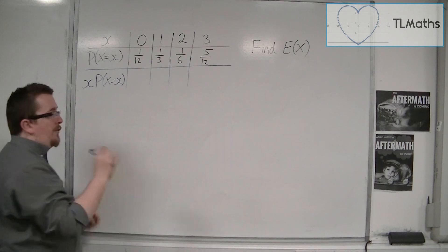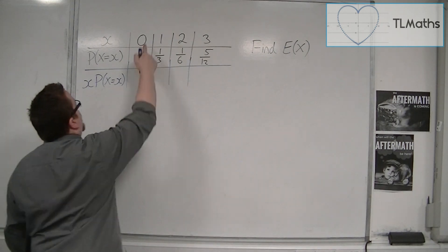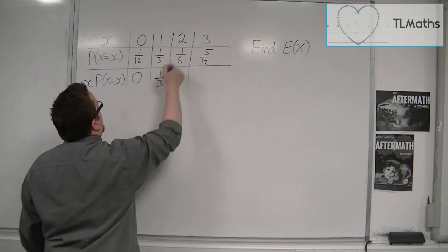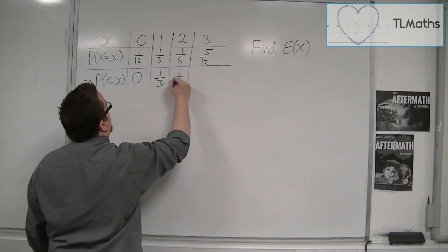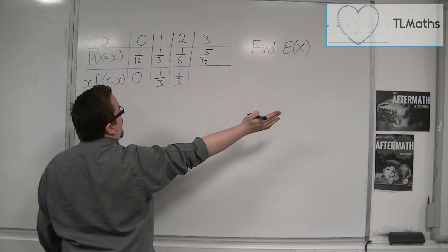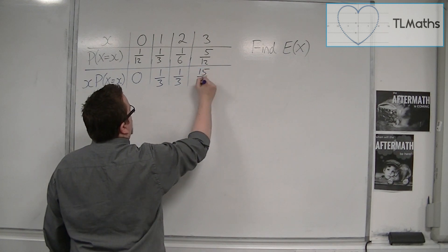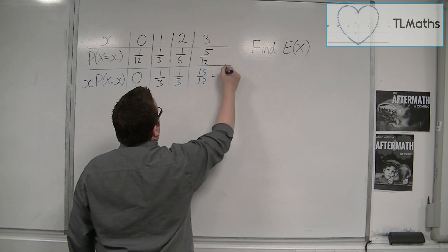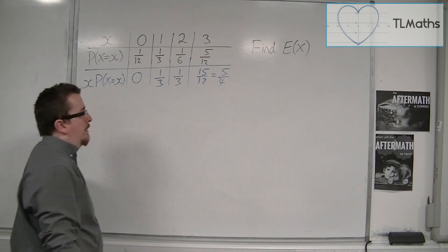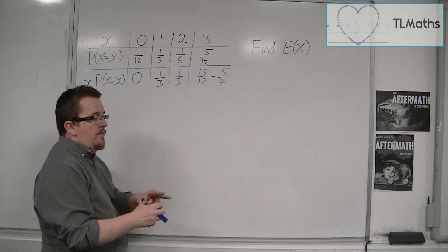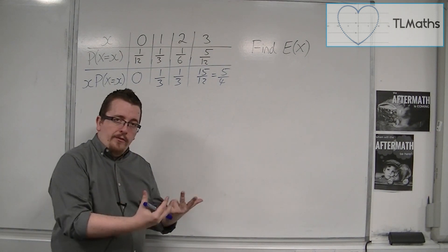So we would work out what x times the probability of x equals. We'd multiply the x's by their frequencies. So 0 times 1/12 is just 0. 1 times 1/3 is 1/3. 2 times 1/6 is 1/3. And 3 times 5/12, well that's 15/12, which I can simplify down to 5/4. So you get your x times f's.